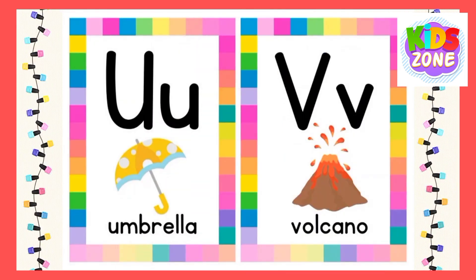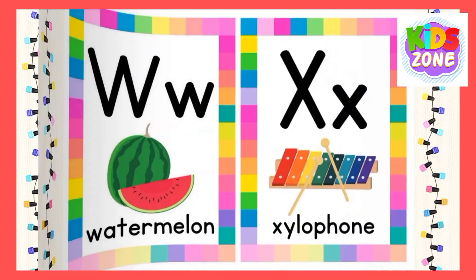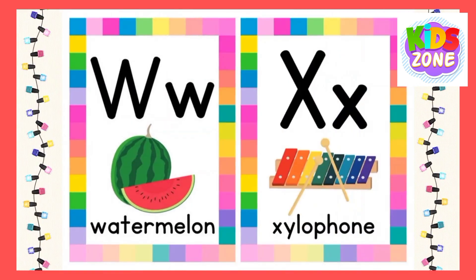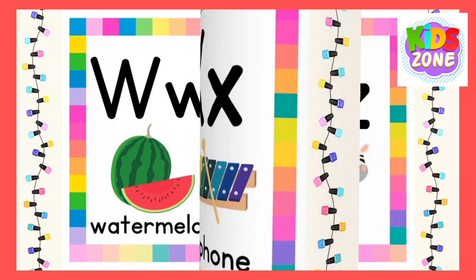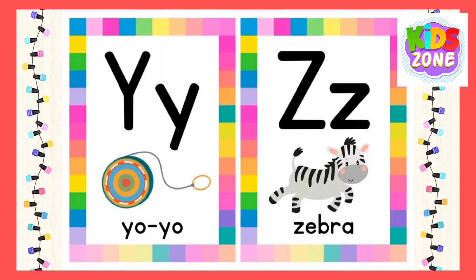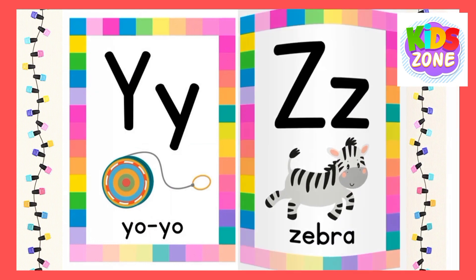B for volcano, W for watermelon, X for styrofoam, Y for Yoyo, J for zebra.